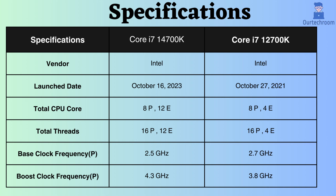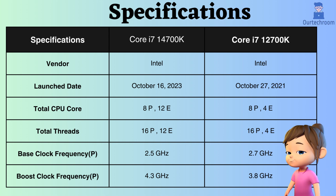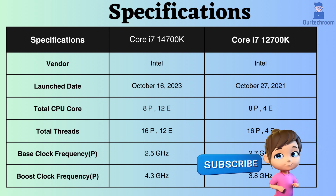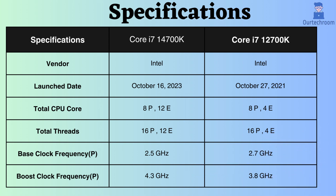The Core i7-14700K features 8 performance cores and 12 efficiency cores, whereas the Core i7-12700K has 8 performance cores and 4 efficiency cores. Additionally, the Core i7-14700K is equipped with 16 performance threads and 12 efficiency threads, whereas the Core i7-12700K has 16 performance threads and 4 efficiency threads. The increased number of cores and threads enables it to handle multiple tasks simultaneously and efficiently.